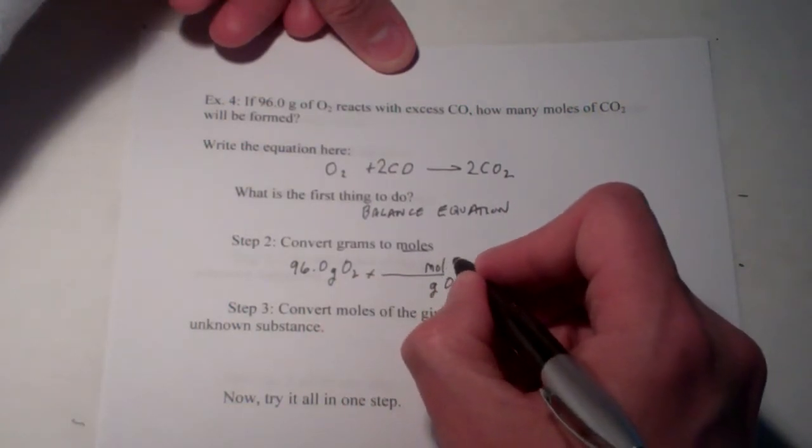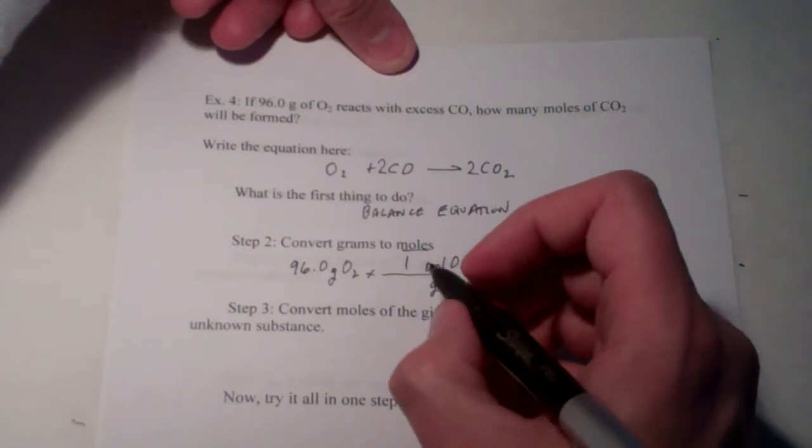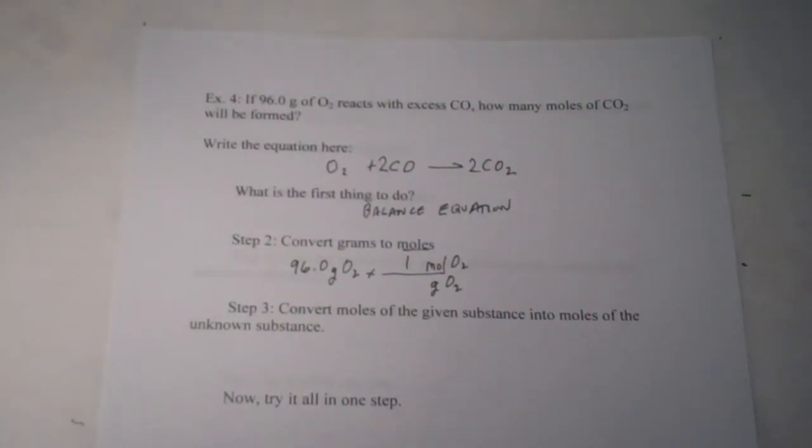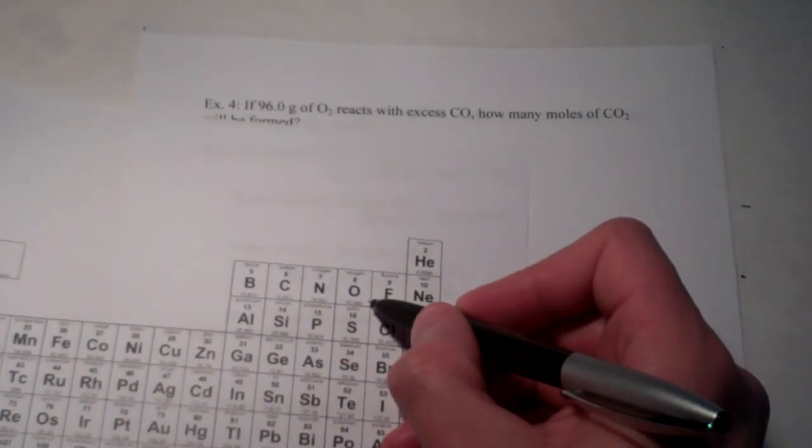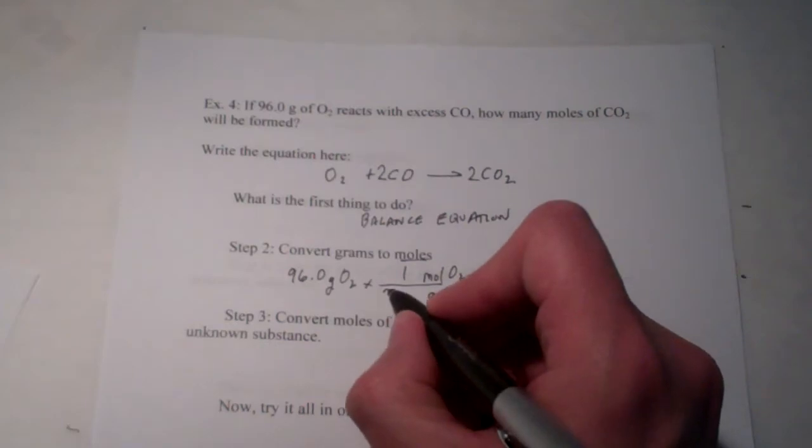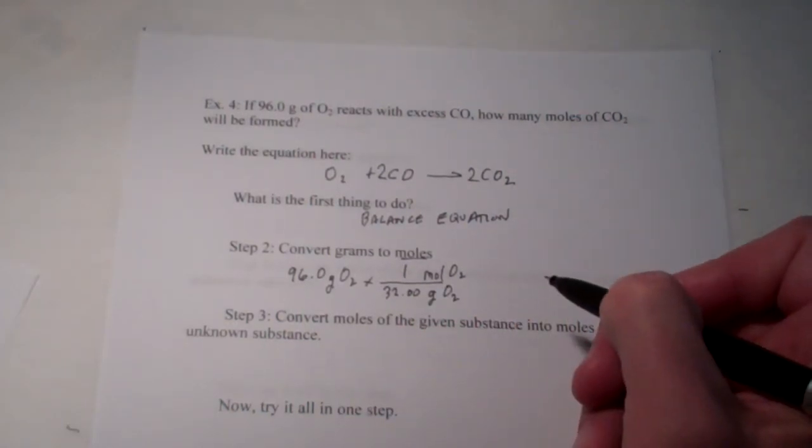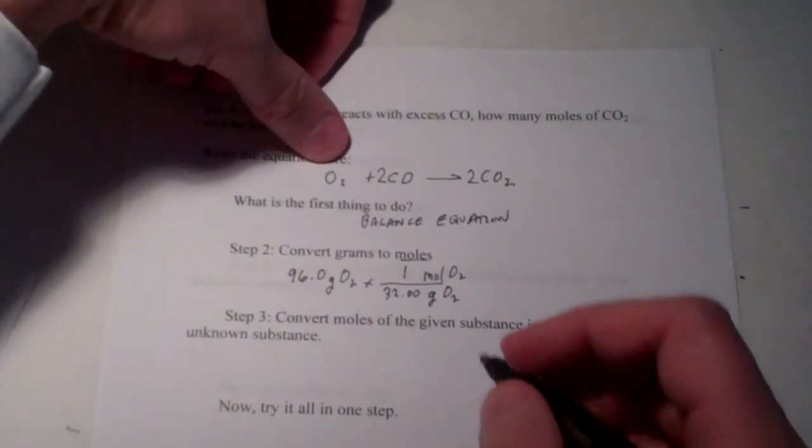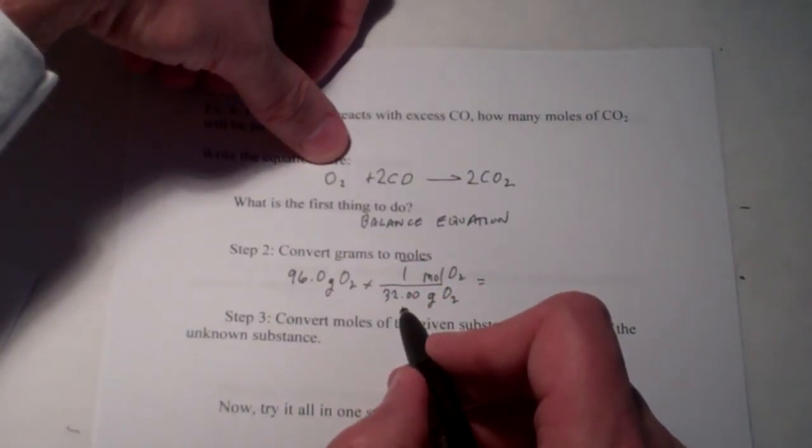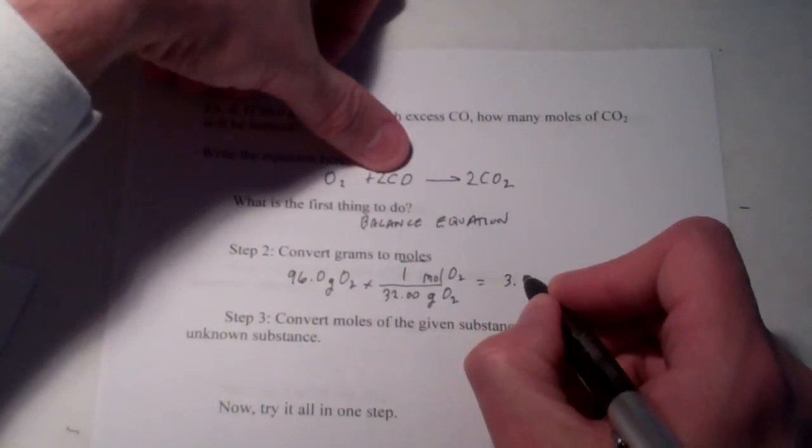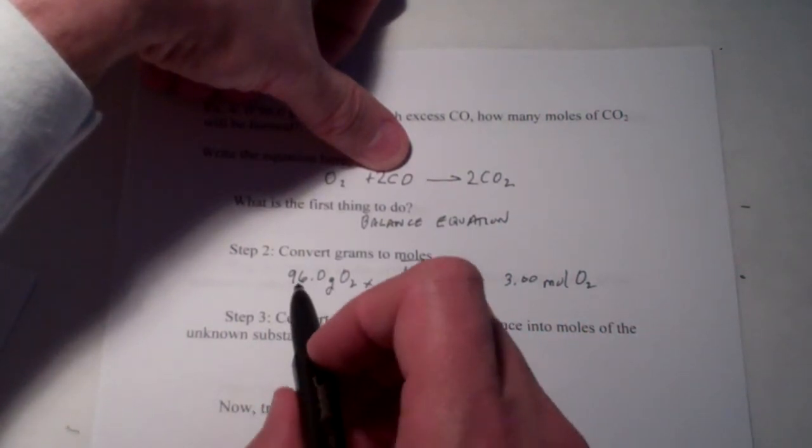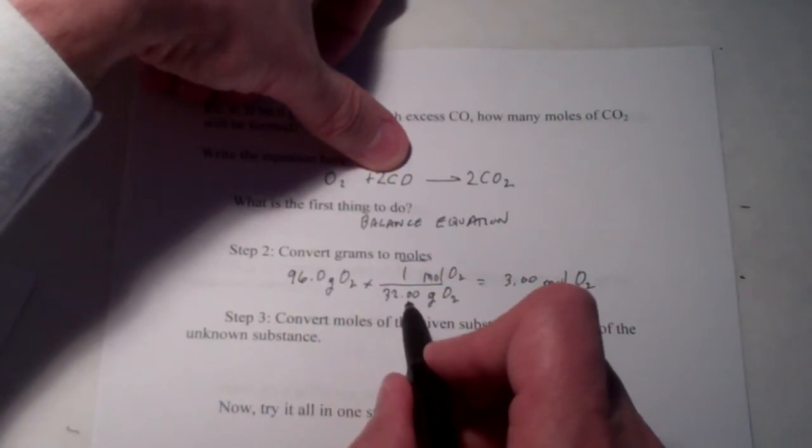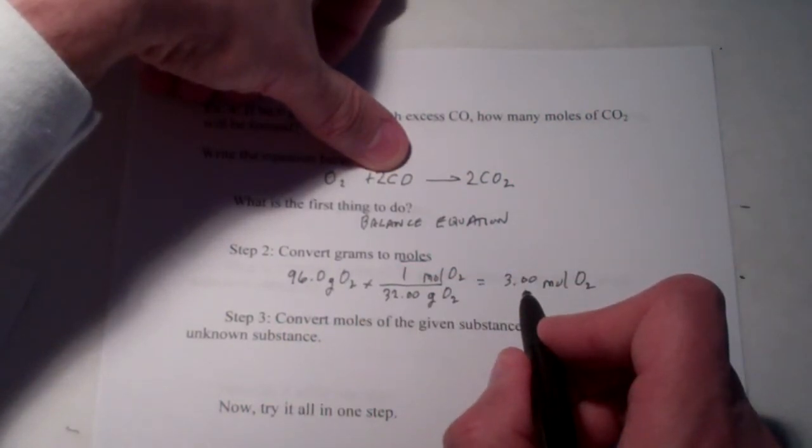And the unit we want to get into. Moles of oxygen. One mole of oxygen gas. If we look at our periodic table, oxygen has an atomic mass of 15.999. Let's call that 16.00. So, two of them would be 32.00 grams per mole. We would have 96.0 divided by 32.00. That gives us 3.00 moles of O2. I'm following some simple significant figure rules. Three significant figures in this measurement. Four in this. I have to go with the lower number of sig figs.